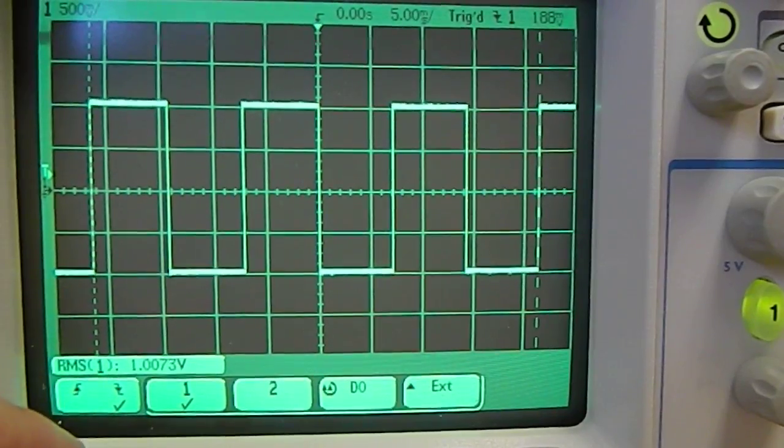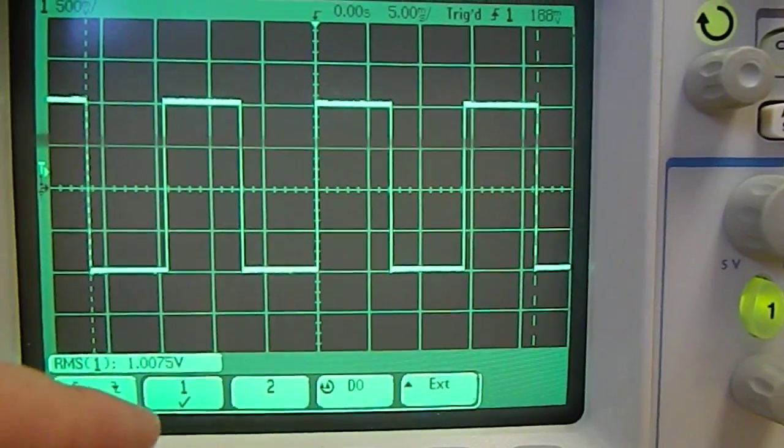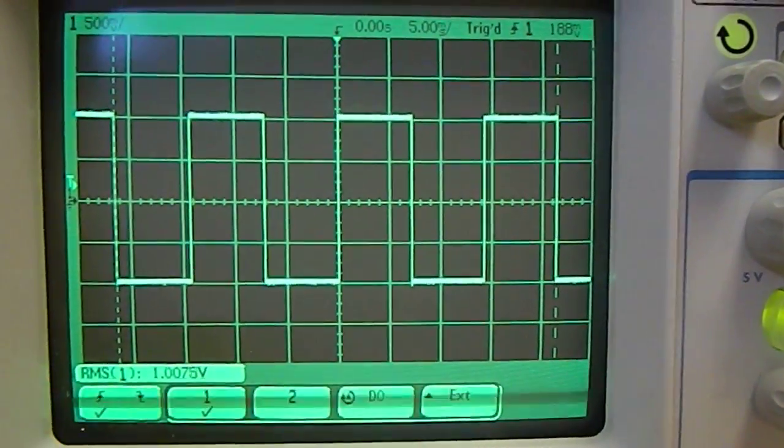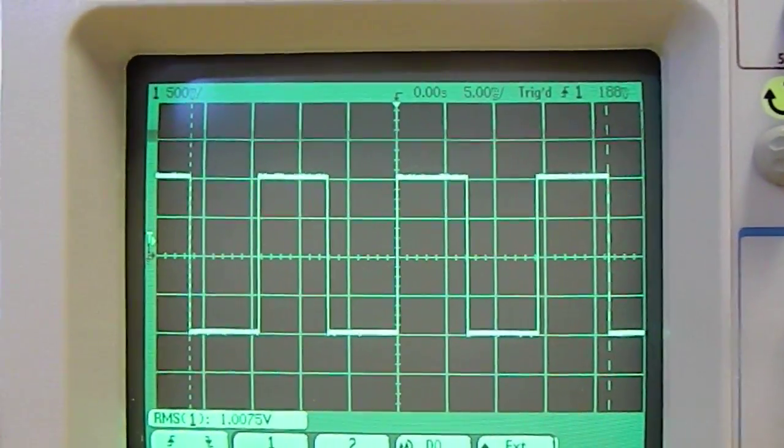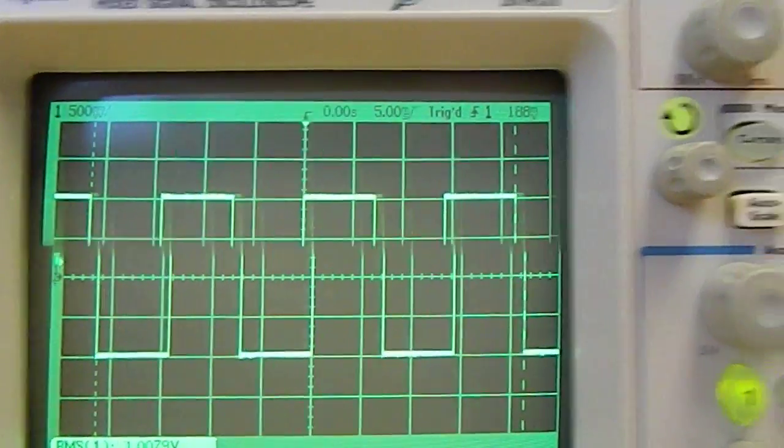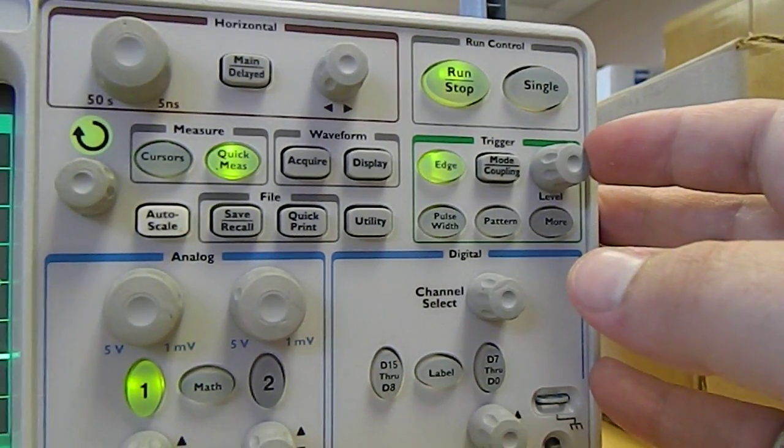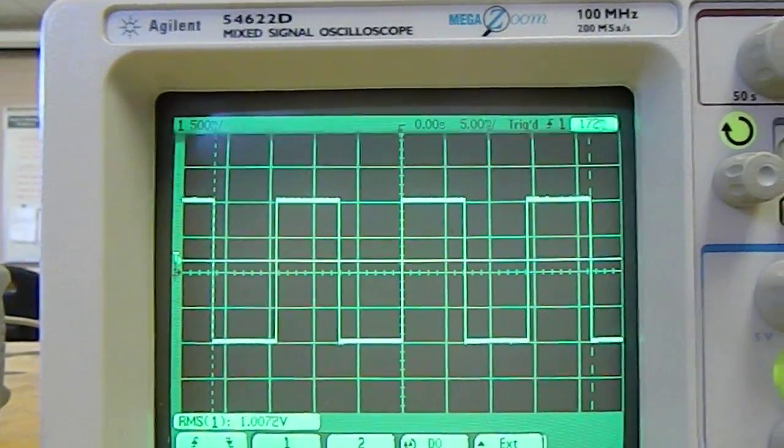And you can choose which channel is your source. You could choose an external trigger if you so desire. So the next step to setting your trigger is to use the little rotary knob here to change the